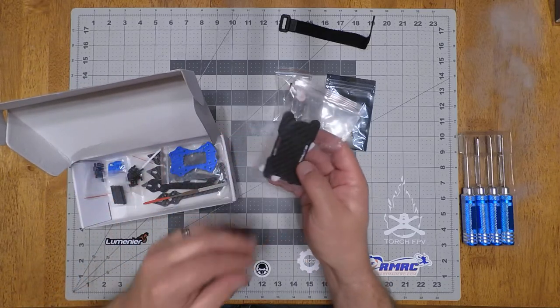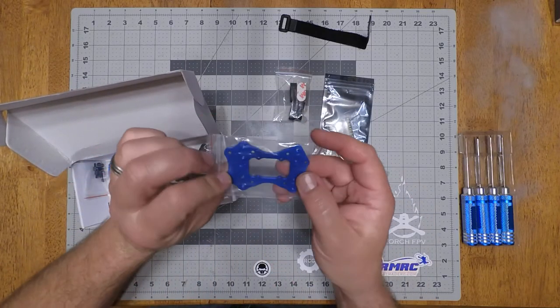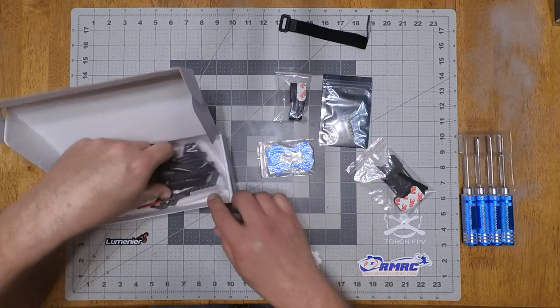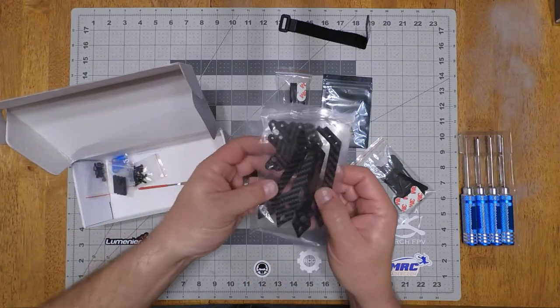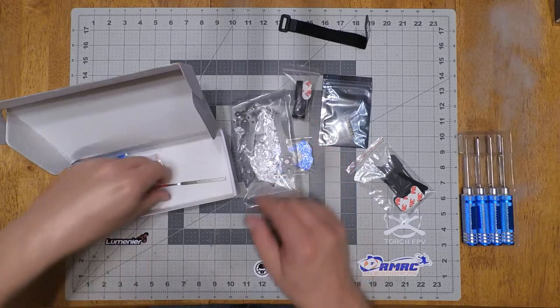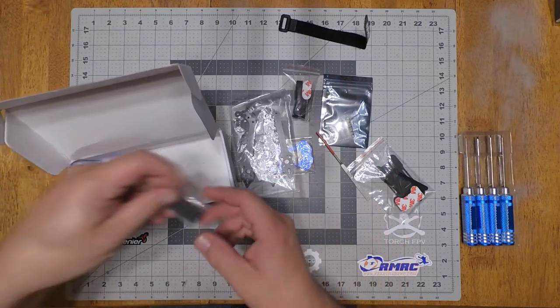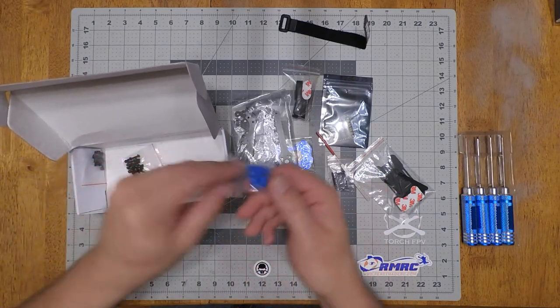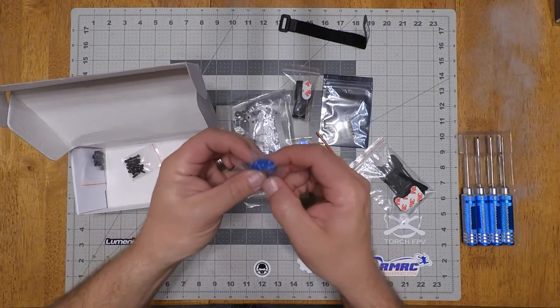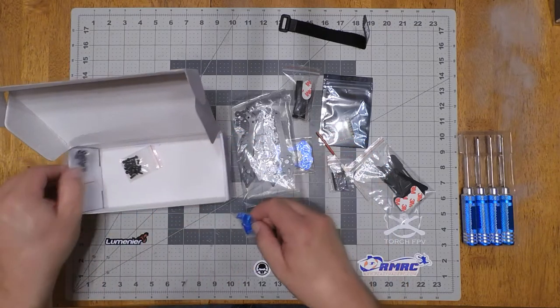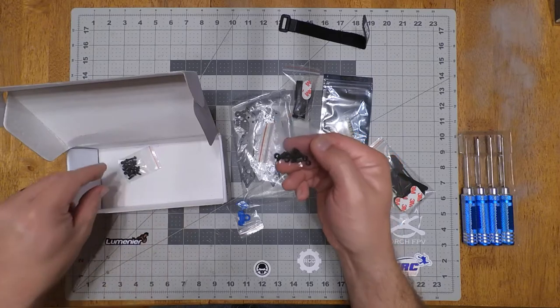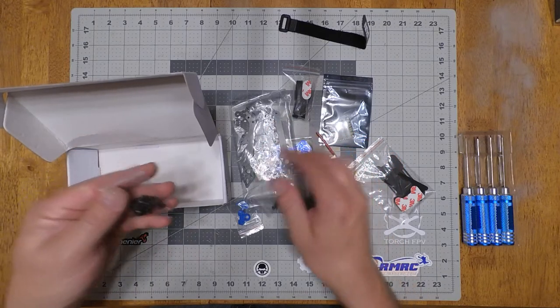Dirty plate, bottom plate, arms, file, standoffs, TPU print for the antenna and the FPV camera, standoffs, and hardware.